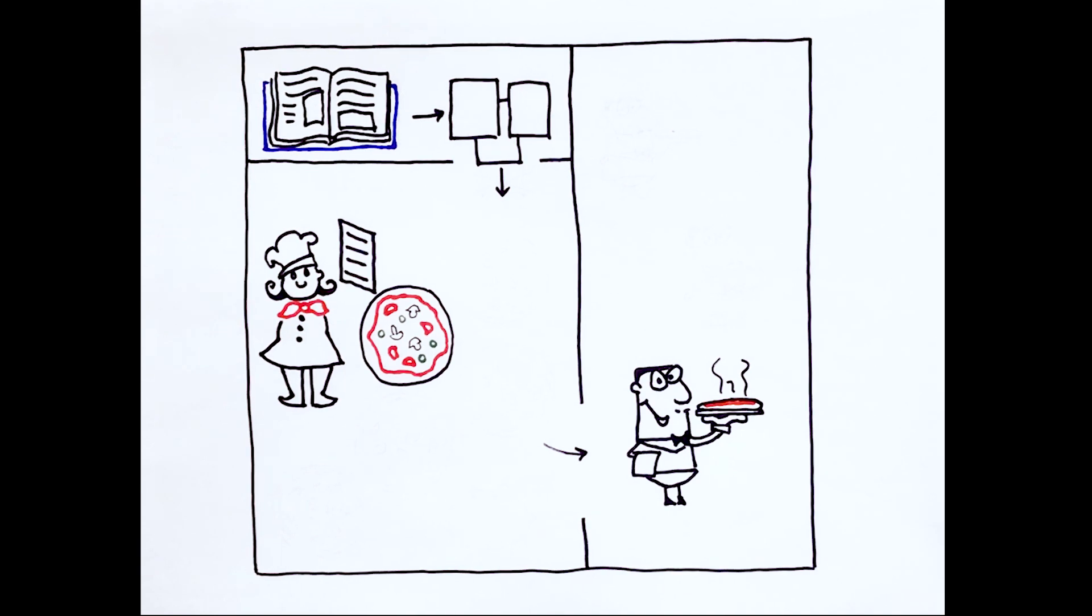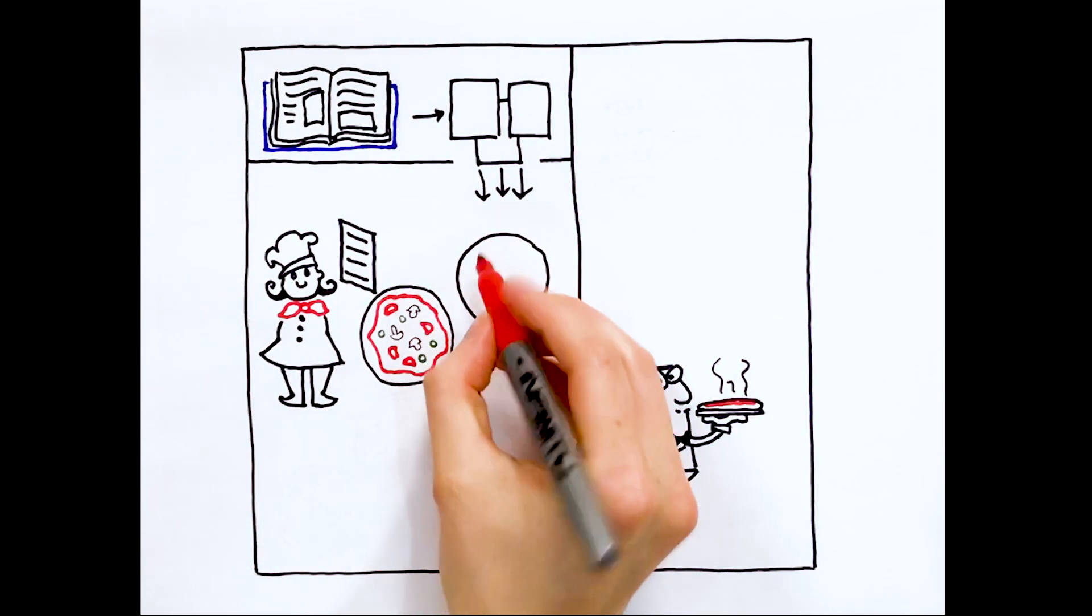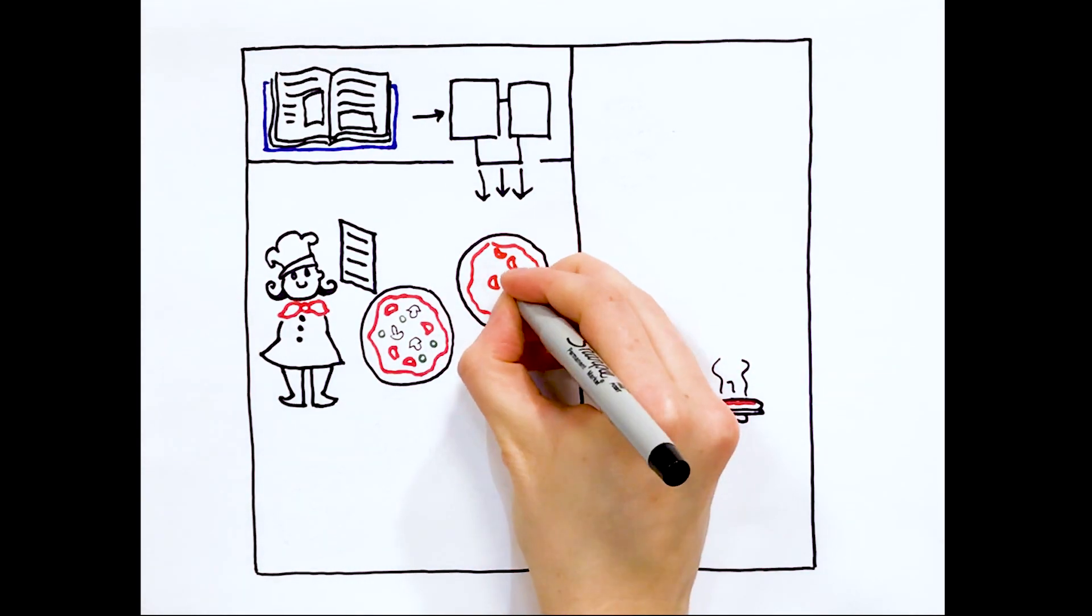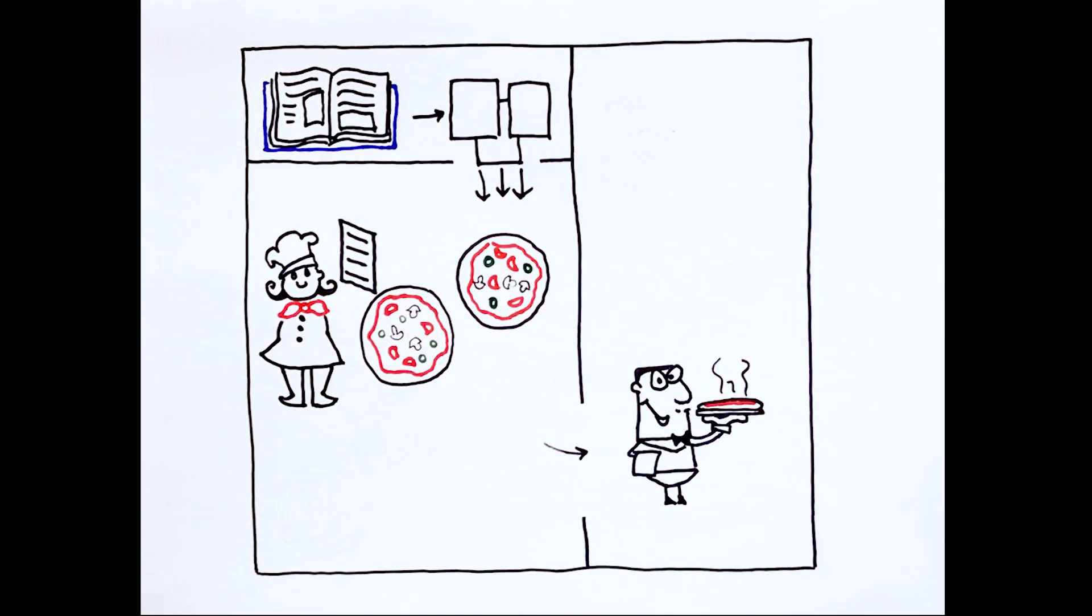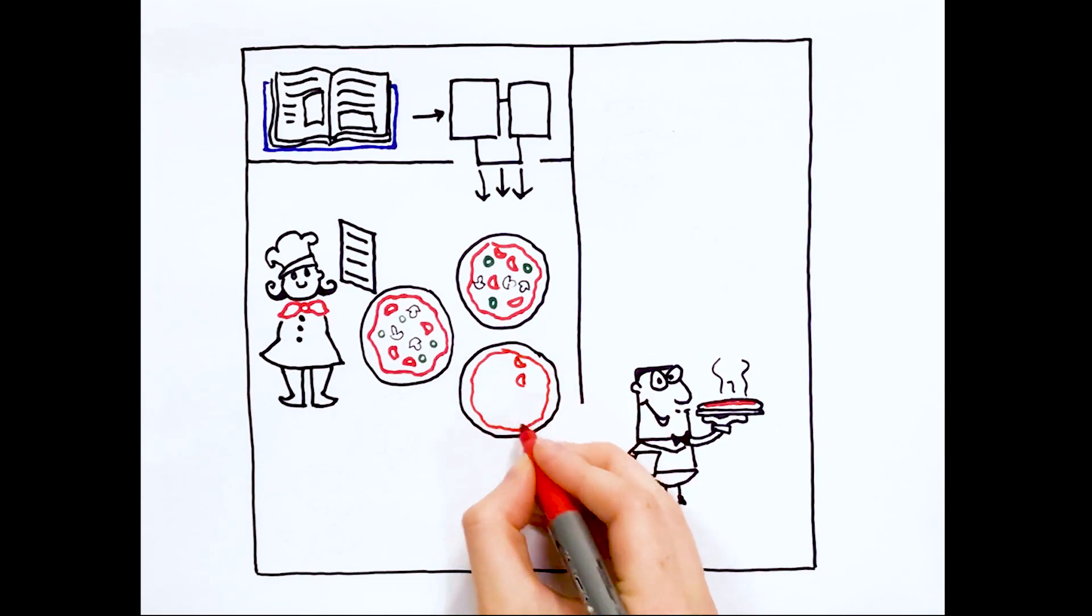The kitchen is like the endoplasmic reticulum, and ER stress is like a dinner rush. As more and more orders come in, the servers can't keep up and food piles up.